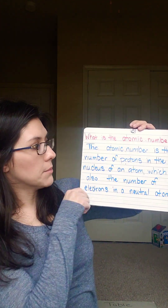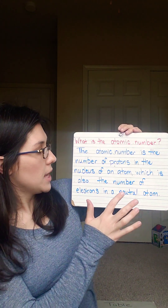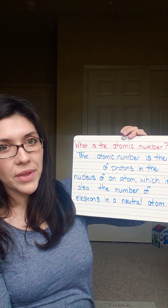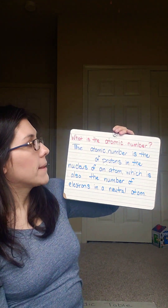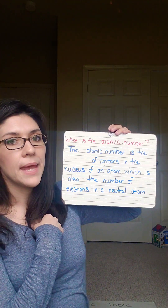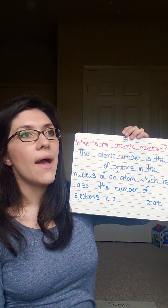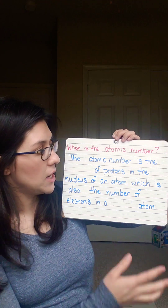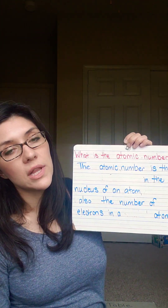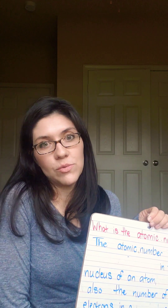We go through and say, 'The atomic number is the number of protons in the nucleus of an atom, which is also the number of electrons in a neutral atom.' Then I erase a word and pretend like it just got so much harder, and I ask them again. We read through it, and after a few times I say I'm really going to make it challenging and erase two words, then maybe another two words. Eventually for the last time, I erase the entire thing and we say it together — and they act like it's really fun and challenging.